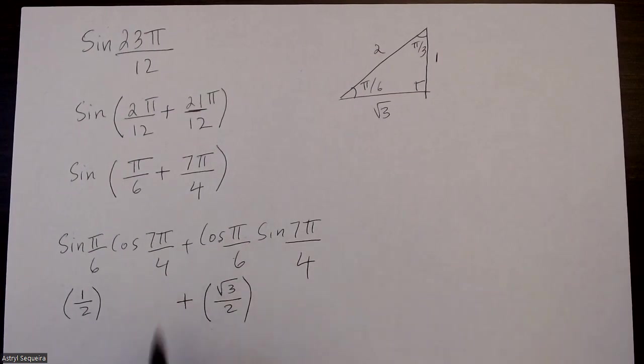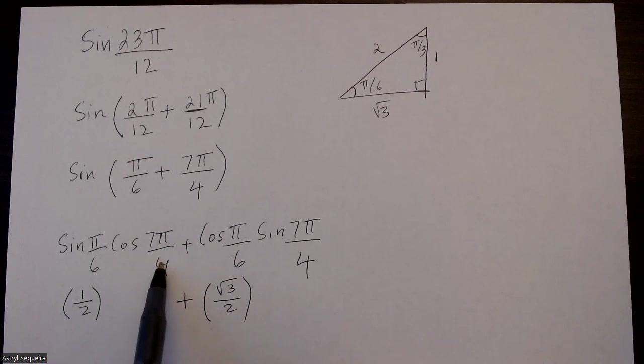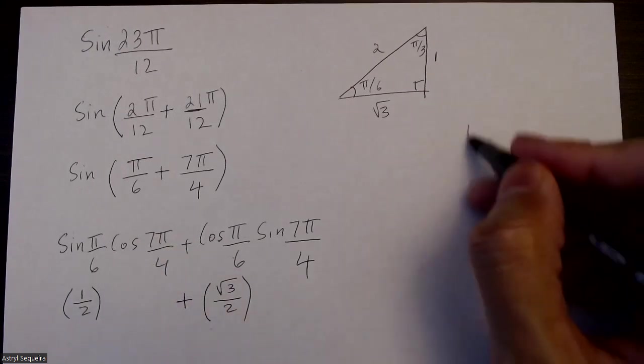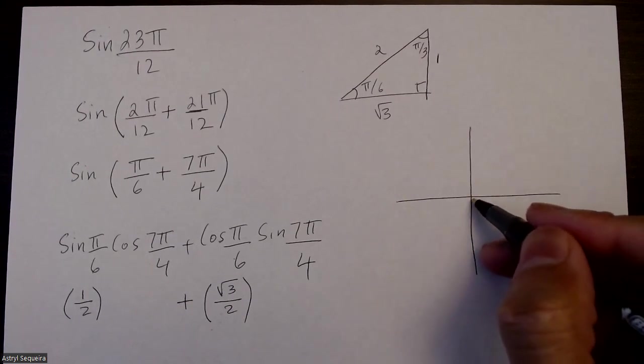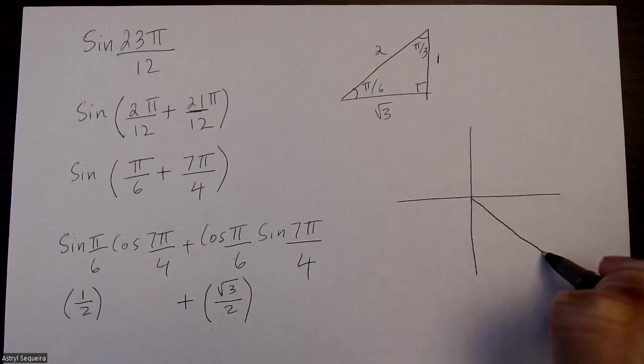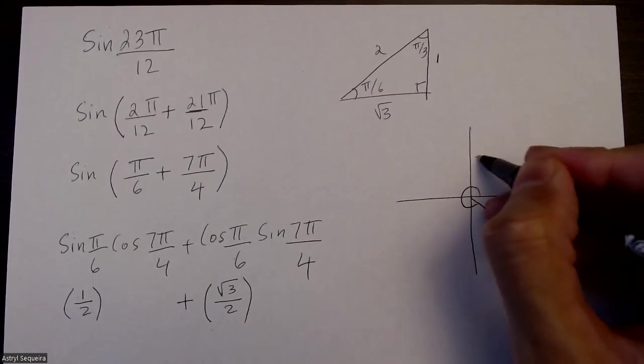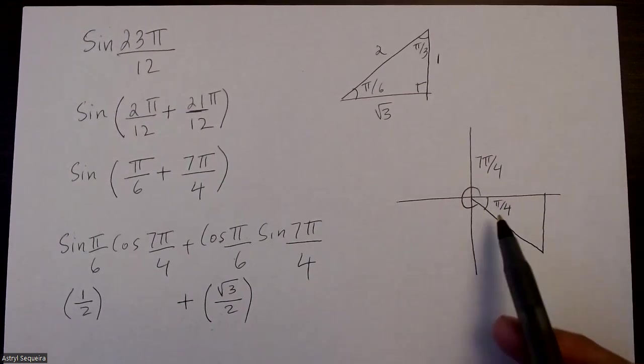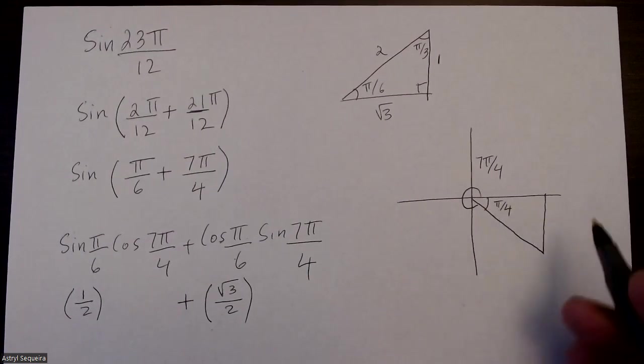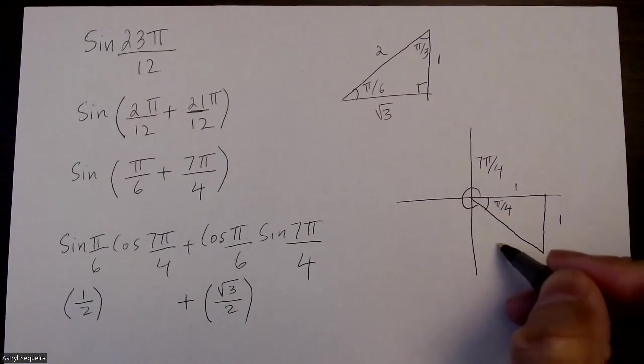So this is how you do it if you had no calculator. For cos of 7π over 4, well 7π over 4 I know is going to be in quadrant number 4. This is my angle of 7π over 4. My acute angle is just π over 4, and I know that the special triangle π over 4 has an adjacent of 1, an opposite of 1, and a hypotenuse of root 2.